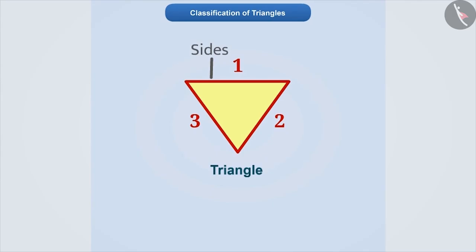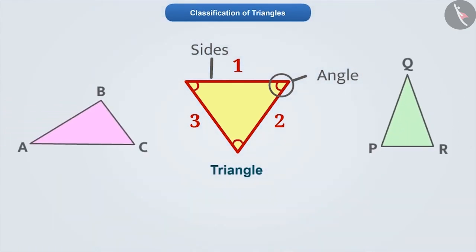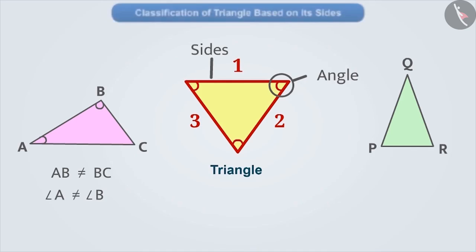Along with three sides, a triangle also has three angles. In different triangles, we see that the measures of sides and angles are different. To understand triangles better, we classify them on the basis of their sides and angles. So, let's first learn the classification of triangles based on the sides.